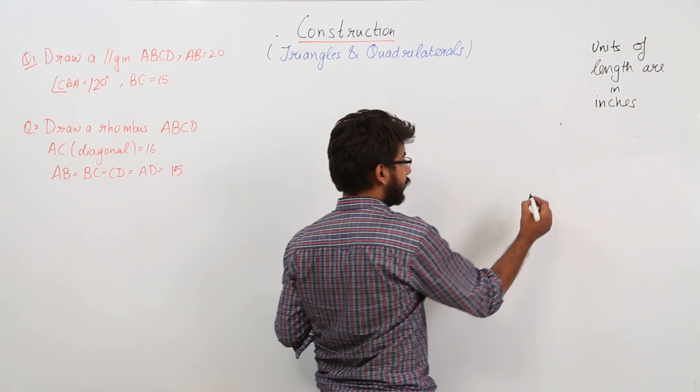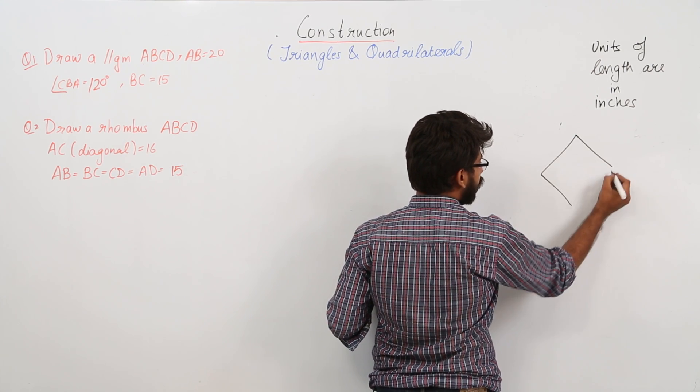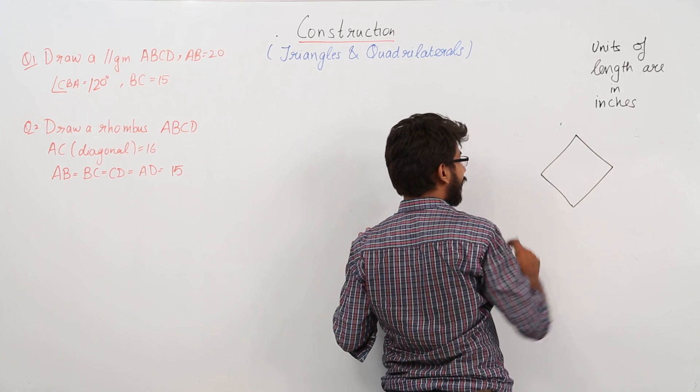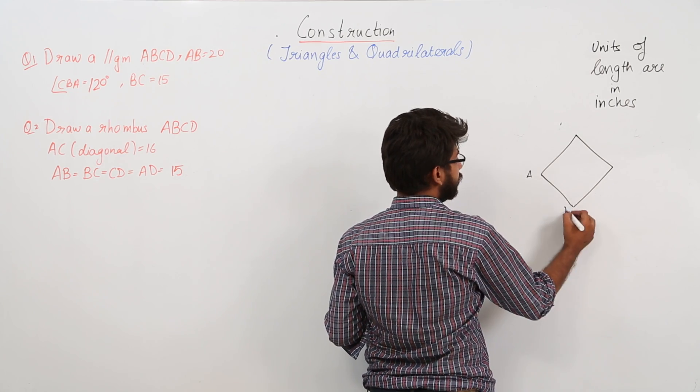So let us first draw a rough figure. Now we know this is a rhombus and the property of rhombus is all the sides are equal and it is also a parallelogram. This is A, this is B, this is C, this is D.